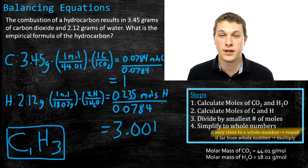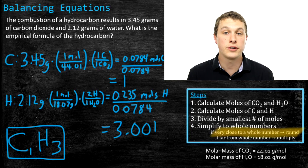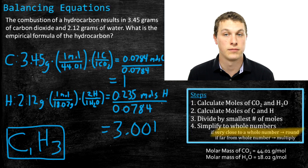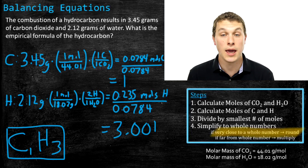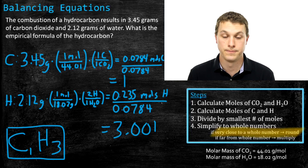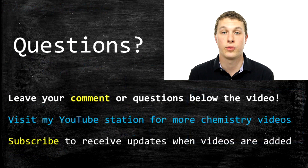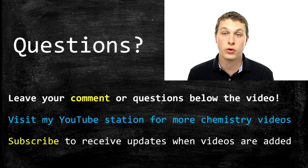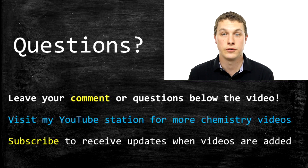This is how we use combustion analysis to figure out the empirical formula of a hydrocarbon. Whenever you burn a molecule made of just carbon and hydrogen, you get out CO2 and water. All the carbon in that CO2 and all the hydrogen in that water came from your hydrocarbon, so if you calculate the moles of carbon and moles of hydrogen, you can get the ratio of carbon to hydrogen. Thanks for watching this episode of Real Chemistry — please leave questions below, visit my channel for other chemistry videos, or subscribe for updates.